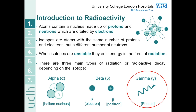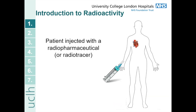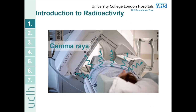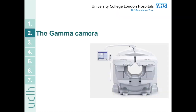In nuclear medicine we inject a patient with a radiopharmaceutical or radiotracer. The radiopharmaceutical part allows us to target a certain biological process and the radioactive component allows us to detect the gamma rays which are emitted and build up a picture of where that tracer has gone in the body. Once the patient has been injected, gamma rays are being emitted in all directions from their body and we need to scan them to create images of the biodistribution of the radiotracer. To detect the emitted gamma rays we use a gamma camera.